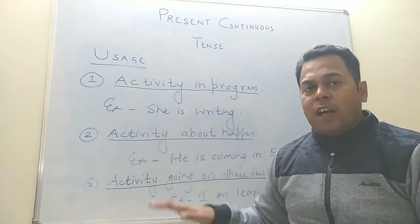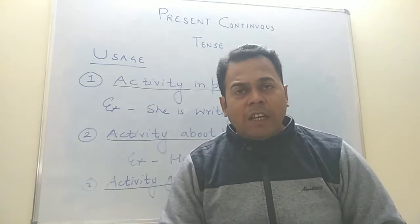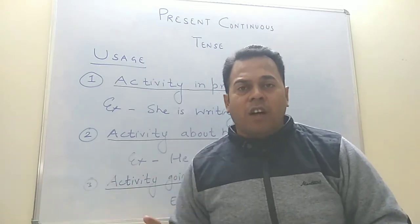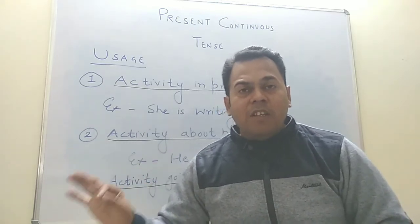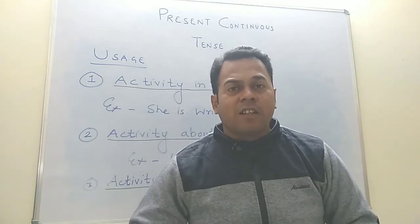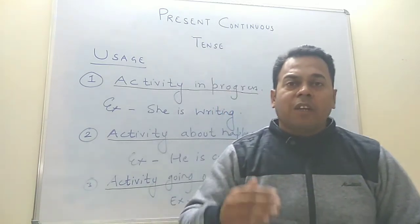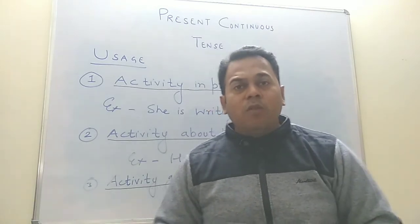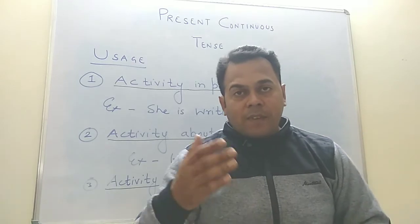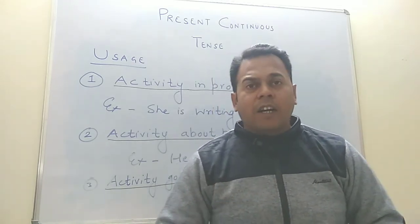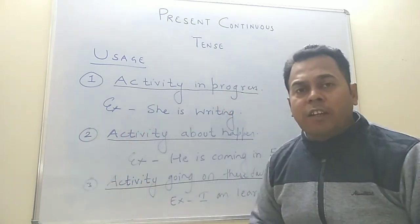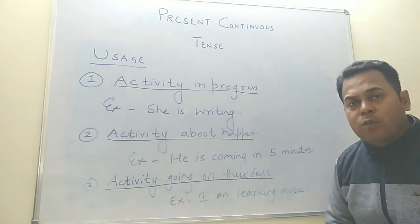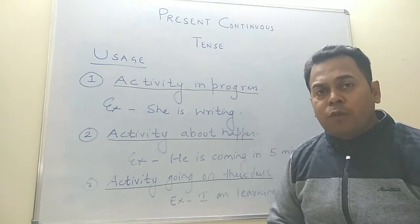Third usage is activity which is going on these days. For example, when a guest comes to your home and asks 'what is your son doing now?' — 'he is working in a private firm.' That means he is not working at that exact moment, but he is working these days. Similarly, 'what is your daughter doing?' — 'she is doing mechanical engineering,' meaning she is doing that course these days. So we use present continuous tense for activity in progress, activity about to happen, or activity happening these days.